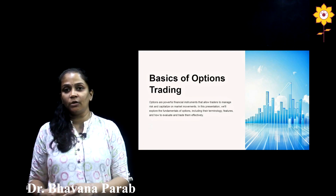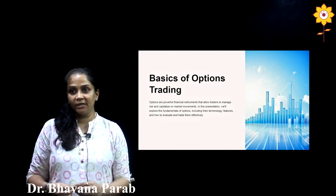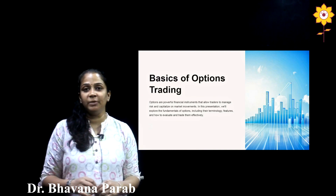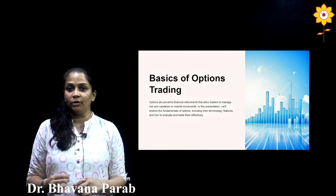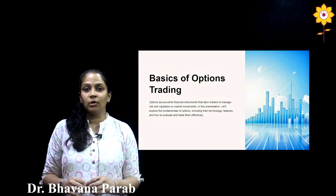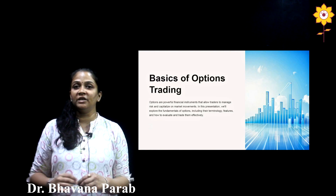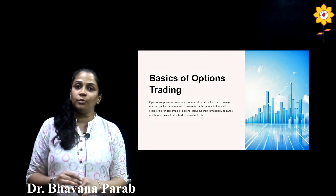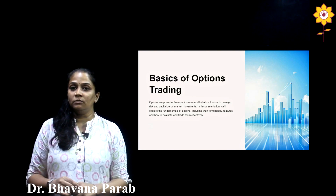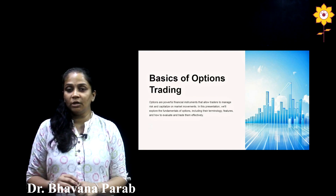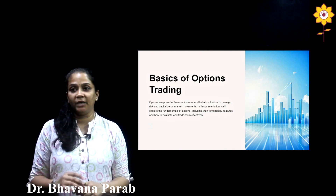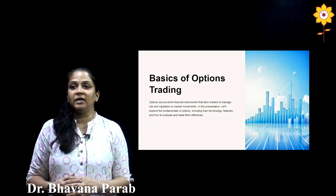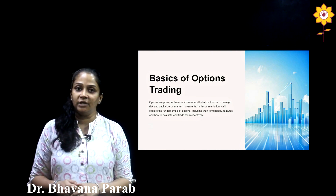Option contracts are similar to future contracts in that the price is decided in advance and trading occurs on a future date, but the obligation of executing the contract is different. Forward and future contracts both must be executed on the specified future date. In option contracts, however, there is an additional benefit: traders are allowed either to execute or not to execute the contract on a future date depending upon market price movements. This helps minimize losses and maximize gains.